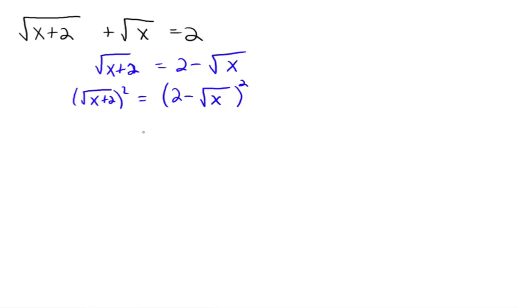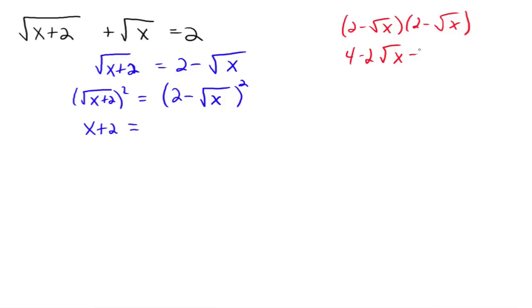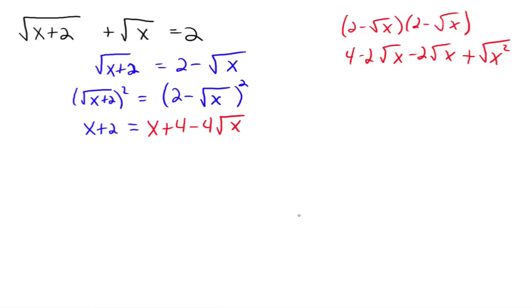Square both sides. The left side is just x plus 2. But on the right side, you've got to multiply it out. The right side really means 2 minus the square root of x times 2 minus the square root of x. If you multiply that out, you get 4 minus 2 radical x minus 2 radical x, and a negative radical x times a negative radical x is a positive x. The two inside terms go to negative 4 radical x. So you have x plus 4 minus 4 radical x on the right-hand side. Still got a radical, but that's okay — we originally had two radicals, now we only have one.